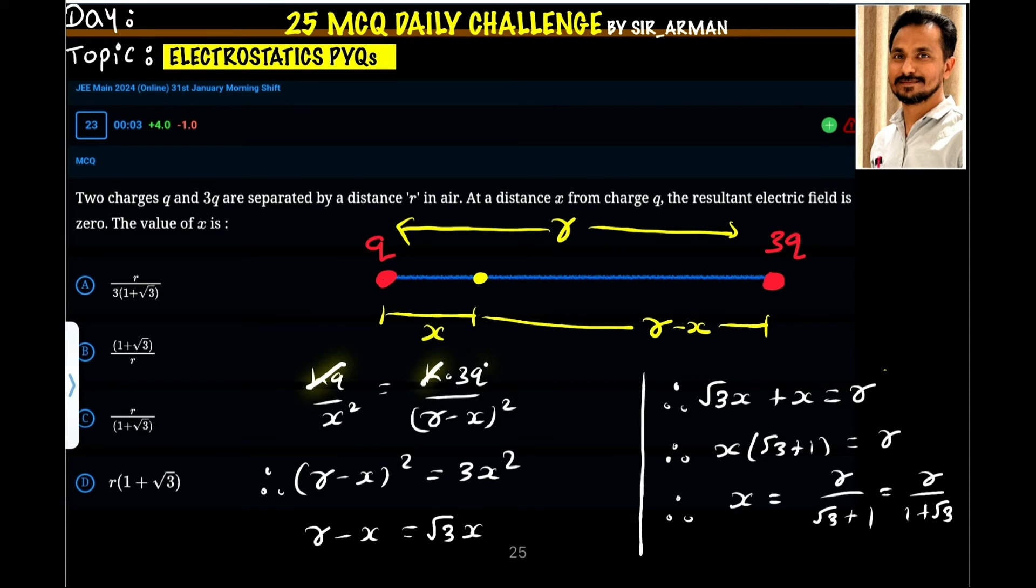Now KQ will get cancelled. So R minus X whole square equals 3X square. Taking roots on both sides, R minus X equals root 3 times X.